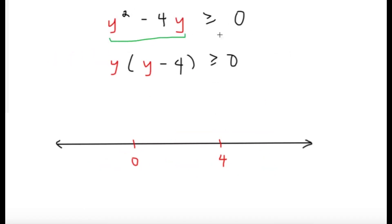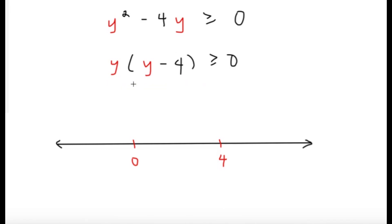We want this to be greater than or equal to 0, again because x is a real number. So this is now technically a quadratic inequality. To solve it, we factor the left side: we have y times y minus 4 greater than or equal to 0. Now we want to get the critical points — the points where the left side becomes 0. So we're just solving for the roots: y equals 0 and y equals 4.